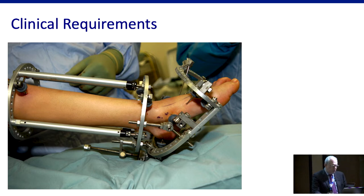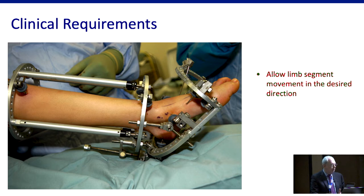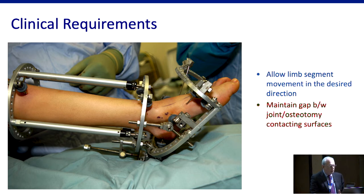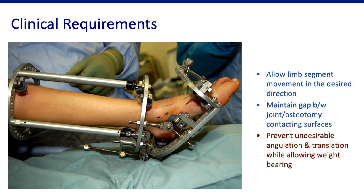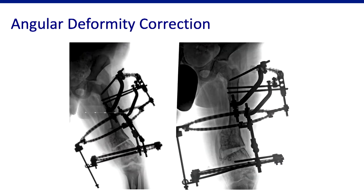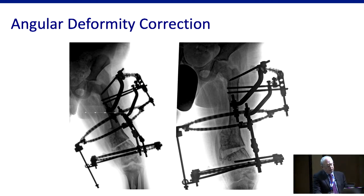Clinical requirements for hinges are very simple. They are supposed to allow limb segment movement in the desired direction — one segment of the limb relative to another. They should maintain a gap between joint or osteotomy surfaces to prevent contact. And they should prevent undesirable angulation and translation while allowing weight bearing. For angular deformity correction it's very clear — everyone after spending these four days can easily manipulate with those hinges. We can correct deformities doing an opening wedge, a closing wedge, move it away with lengthening, or create translation.